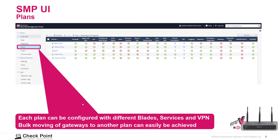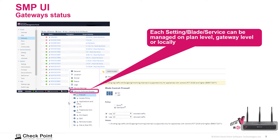Each plan can be configured with different blades, and moving gateways in bulk to another plan is very easy to achieve. You can see examples of the different plans here, what they include, and which blades are enabled on each plan.